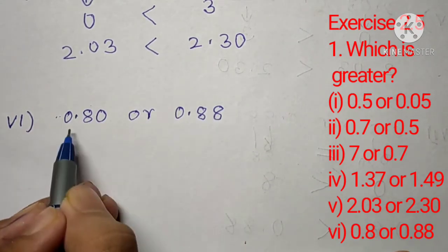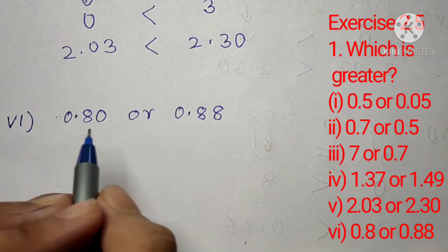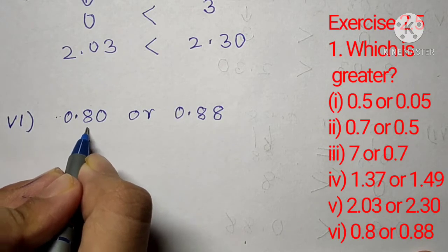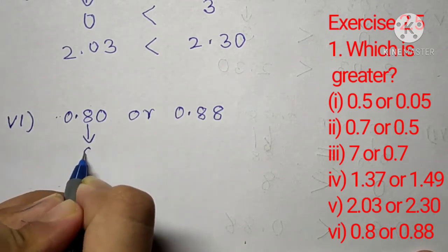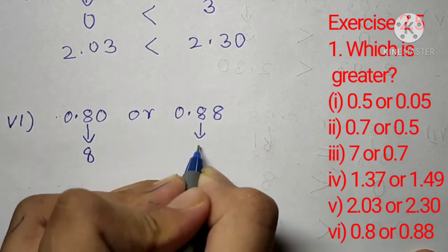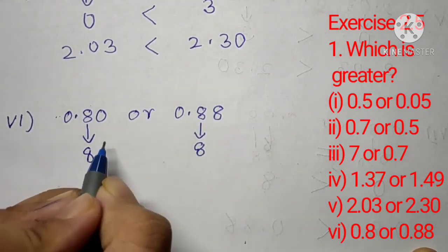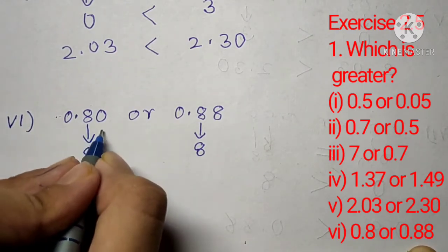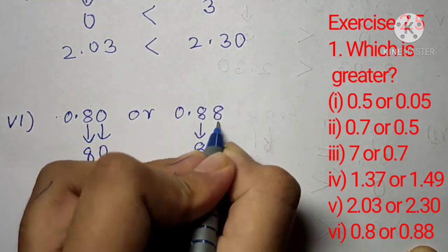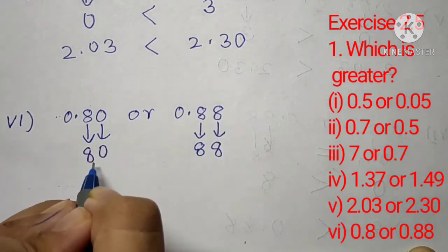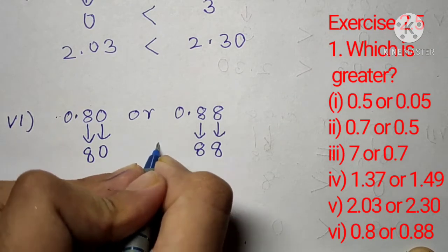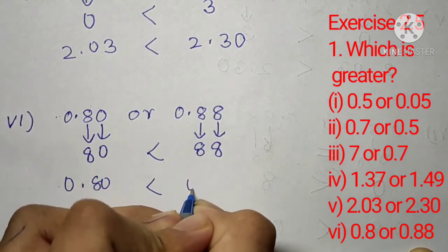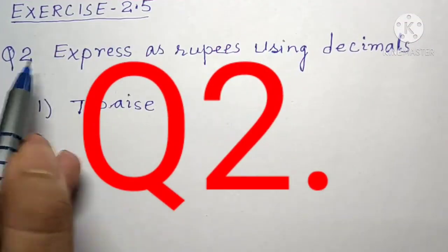Question number 1, part 6: which is greater, 0.80 or 0.88? Both numbers have 0 on the left hand side. Comparing the right hand side, starting from the 10th place, both have 8, so they are equal. We then compare the 100th place: here it is 0 and here it is 8. Since 80 is smaller than 88, 0.80 is smaller than 0.88.